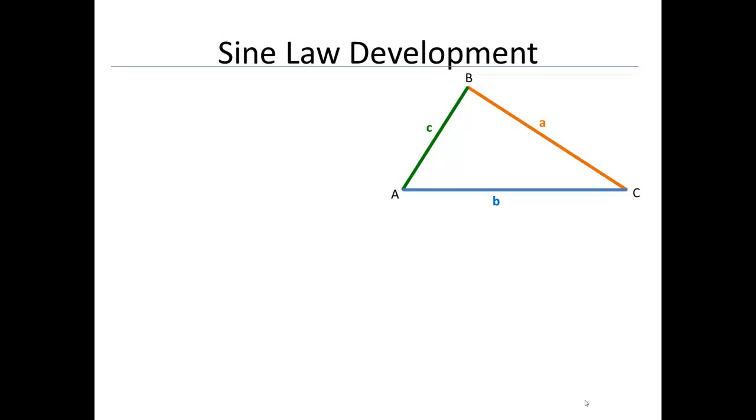So now we're going to go on to what type of law we would need or what type of tool we would need in order to solve an oblique triangle. And remember, an oblique triangle is a triangle in which you have one angle that's between 90 and 180 degrees.